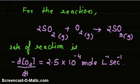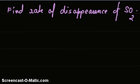For the reaction 2SO2 plus O2 gives 2SO3, rate of reaction is minus dO2 divided by dT equals 2.5 into 10 raised to minus 4 moles per liter per second. Find rate of disappearance of SO2.